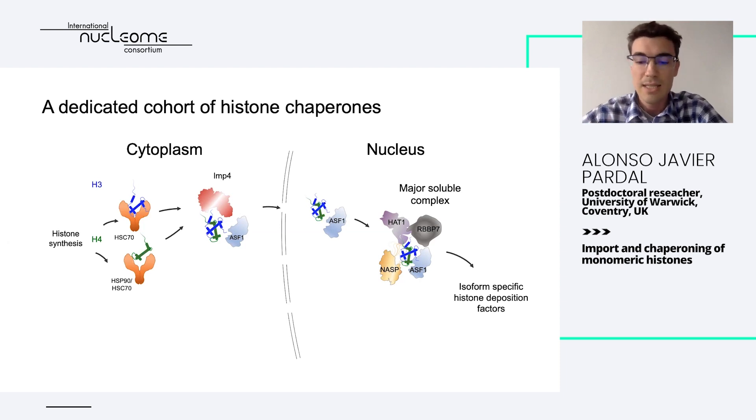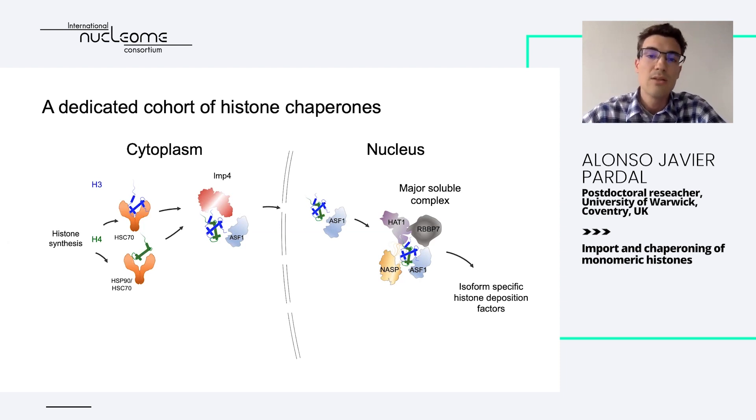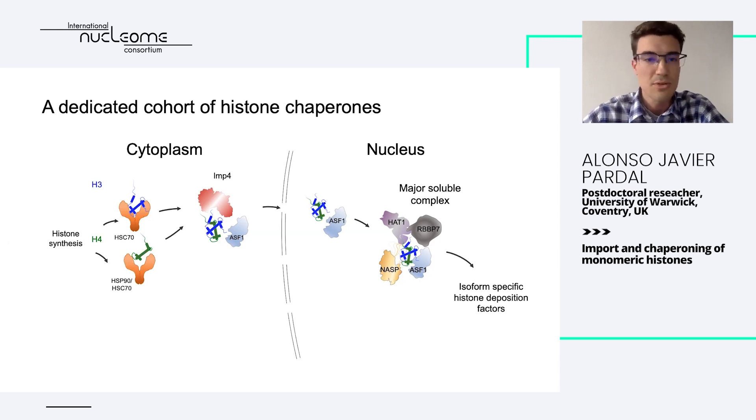Together with these, I introduce another histone chaperone, NASP, which is also a soluble histone chaperone. They all interact together, forming what is known as the major soluble complex, whose task is to pass on the histone H3 and H4 dimer into the histone deposition factors, which act replication-dependently or independently to form the nucleosomes.